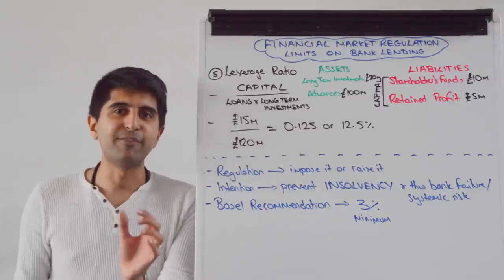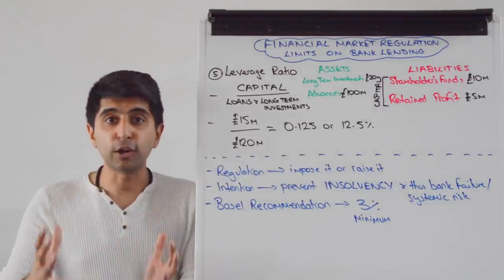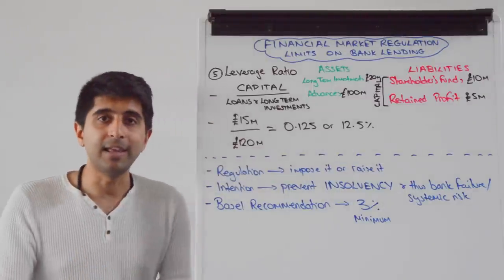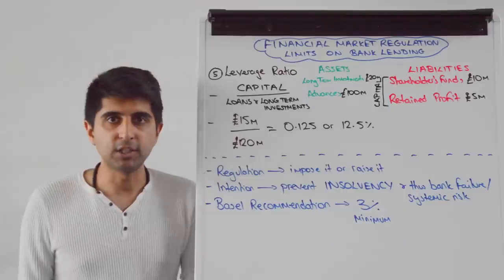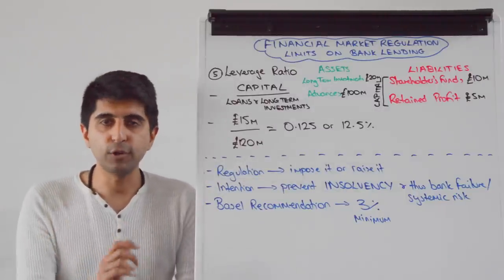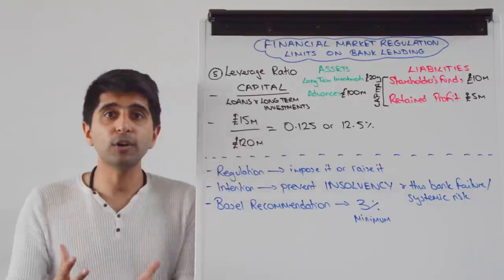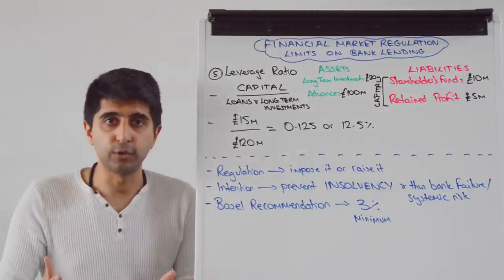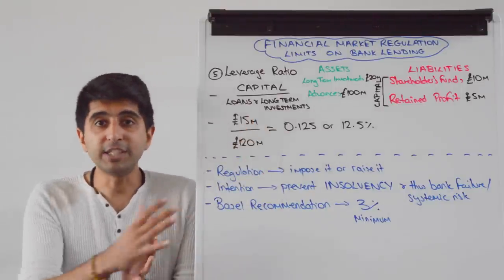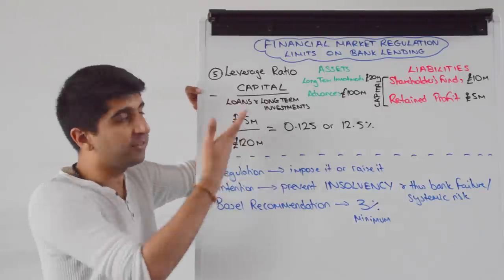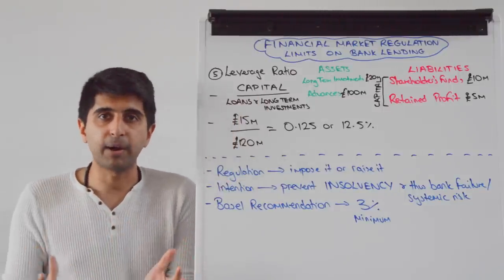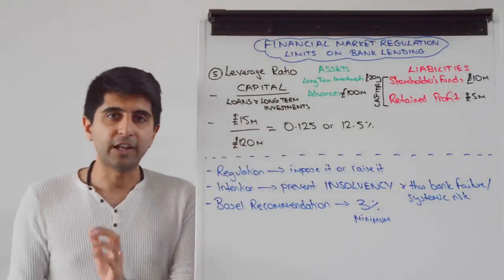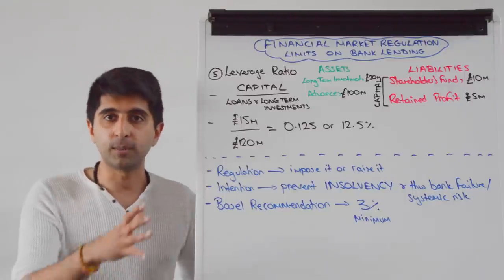The Basel committee like leverage ratios because they are more comprehensive and a better safeguard against bank failure. They recommend a minimum requirement of 3%. The leverage ratio is preferred over the capital ratio because it is more conclusive — all loans are taken into account, not just risky ones, but also long-term investments. Generalizing this: capital divided by total assets makes this leverage ratio very comprehensive. That's why the Basel committee use it now as their primary mode of financial market regulation alongside liquidity ratios — protecting against bank runs, liquidity crises, and insolvency.